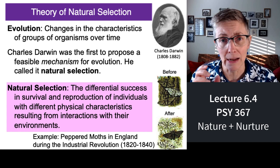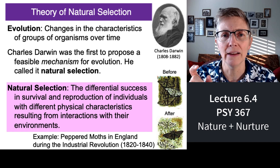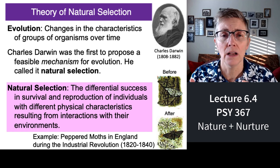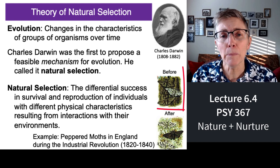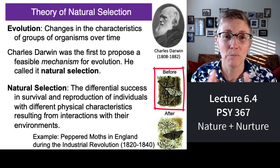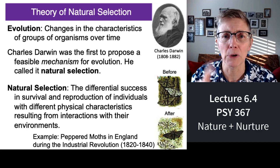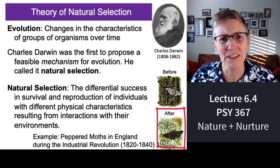In other words, an animal's ability to survive and to reproduce depends upon how they interact with the environment — are the traits they have conducive to a long life in their particular environment? A great example of that is the peppered moth. The peppered moth started out, as you see in the top there, as peppered — a white moth with little sprinkles of black pepper on them. But they evolved over about 20 years into brown or dark moths.